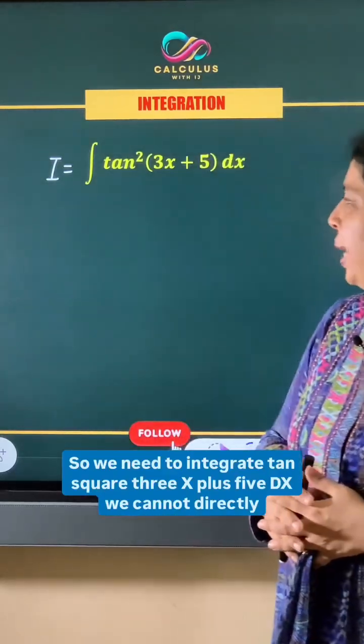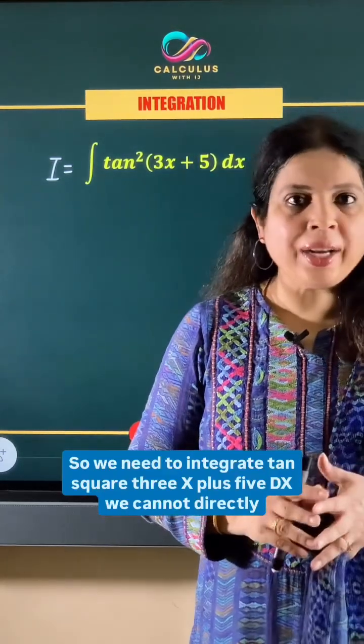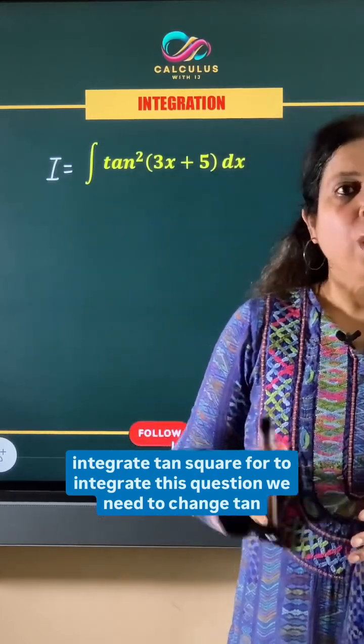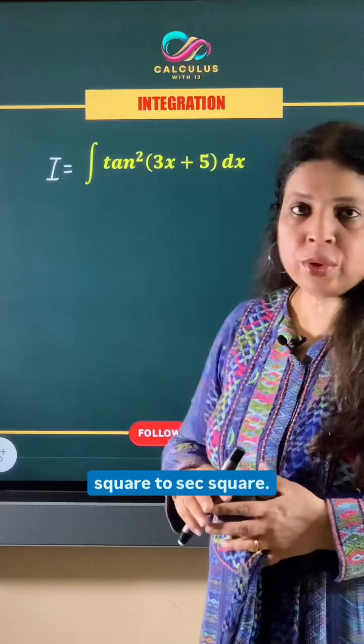We need to integrate tan²(3x+5)dx. We cannot directly integrate tan² for this question. We need to change tan² to sec².